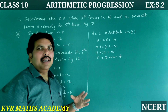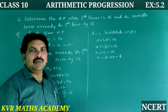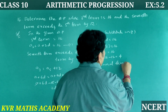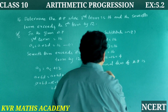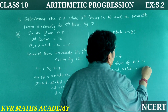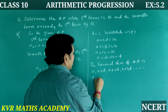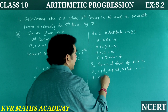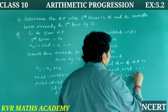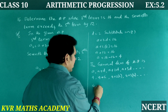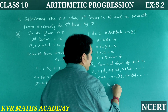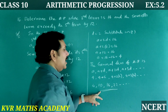The general form of the AP is a, a + d, a + 2d, a + 3d, and so on. Substituting a = 4 and d = 6, the required AP is 4, 10, 16, 22, and so on.